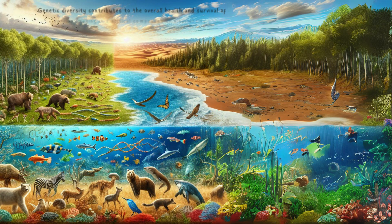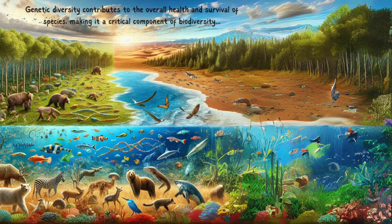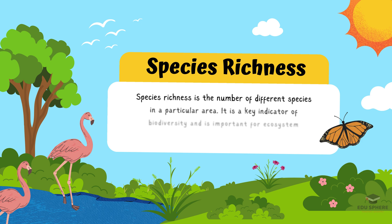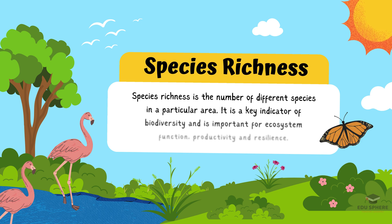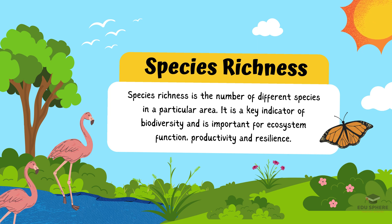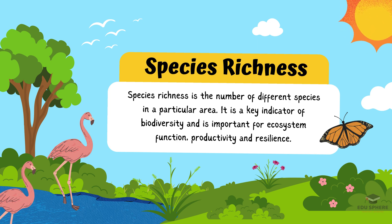Genetic diversity contributes to the overall health and survival of species, making it a critical component of biodiversity. Next, we have species richness. Species richness is the number of different species in a particular area. It is a key indicator of biodiversity and is important for several reasons.